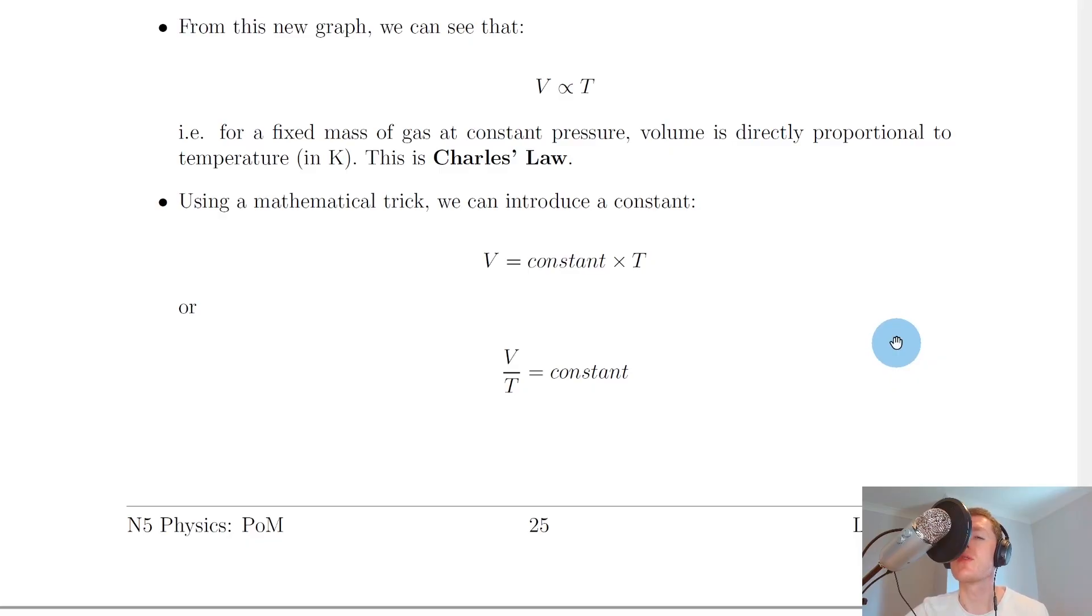So let's get started. The conclusion from the theory video on Charles' Law experiment was that volume is directly proportional to temperature for a fixed mass of gas at constant pressure. This is what we called Charles' Law.